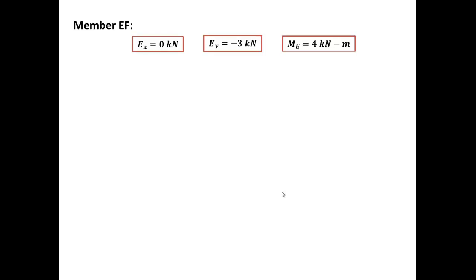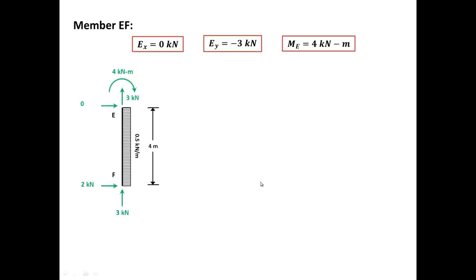Now we'll try to draw the shear and bending moment diagrams plus the normal force diagram for the whole frame, but we're going to take them member by member. This is what we have for member EF: EX equals zero kilonewtons, EY negative three kilonewtons, and ME equals four. What we see right here is the normal force diagram, and remember we say this is in compression with a value of three kilonewtons.